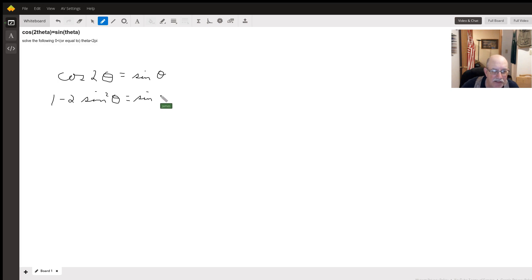So that's going to equal sine of theta. Now we have basically a quadratic equation, so we want to set that equal to 0. Moving everything over to the right side, we get 0 equals 2 sine squared theta plus sine of theta minus 1.